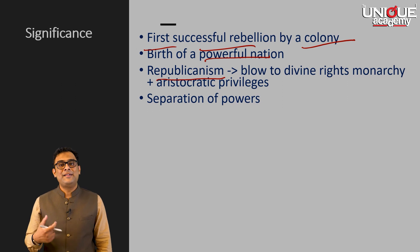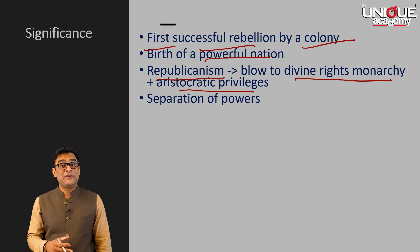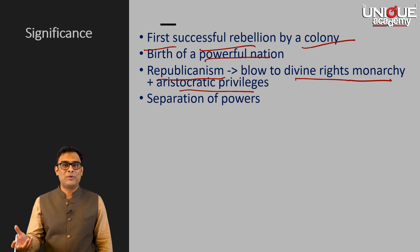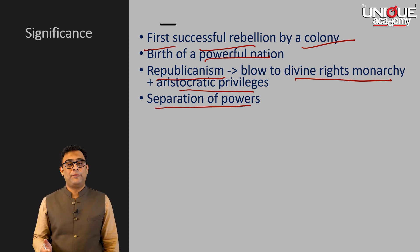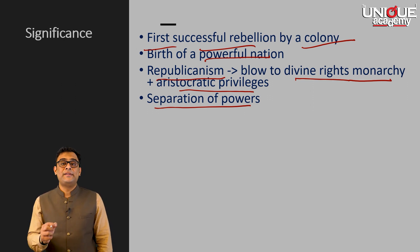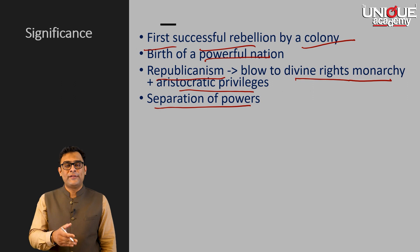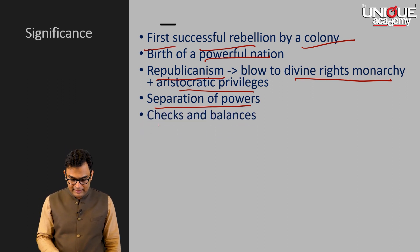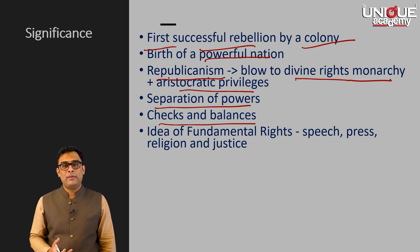Third, it supported or created the environment for republicanism, which was a blow to divine rights monarchy and aristocratic privileges of the nobles — this must be seen in the context of Europe's absolute monarchies. Then it gave the idea of separation of powers, so that the state does not become so all-powerful that it takes away the basic rights of citizens. After the revolution's success, a state was created modeled on separation of power, with an elaborate system of checks and balances so that all wings of the state would be kept under control.